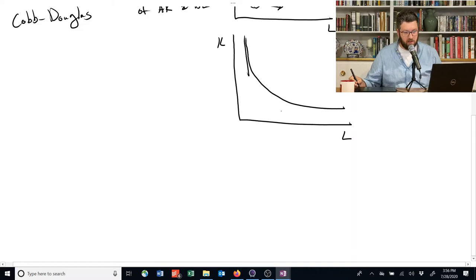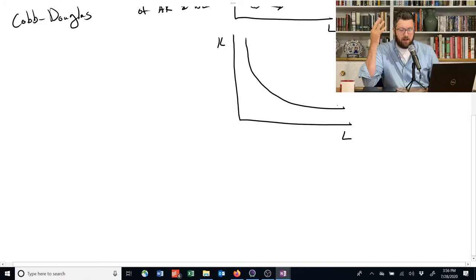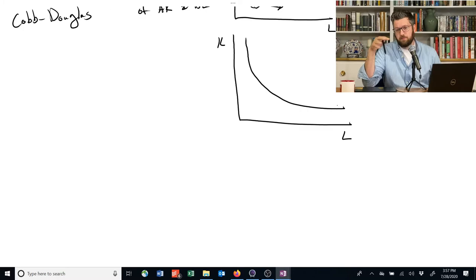And so a Cobb-Douglas production function has this intuition that in the middle, when you have a mix of capital and labor, they're closer to perfect substitutes. So you give up some labor, you can replace it pretty easily with capital. But when you're on the extremes, when you're all the way over here or all the way over here, whichever unit is in scarce supply is really hard to replace. And that's kind of like being a perfect complement.